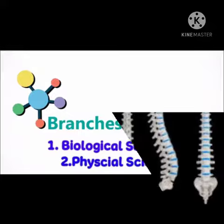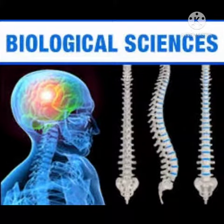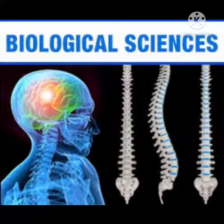Biological sciences are divided into two groups. First is botany, that deals with the study of plants, and second one is zoology, that deals with the study of animals.